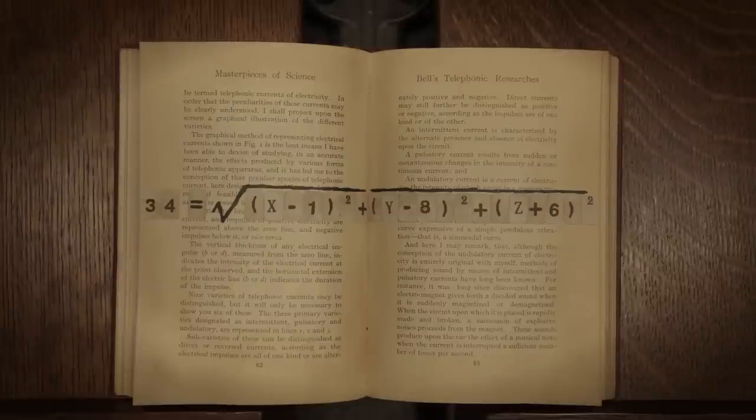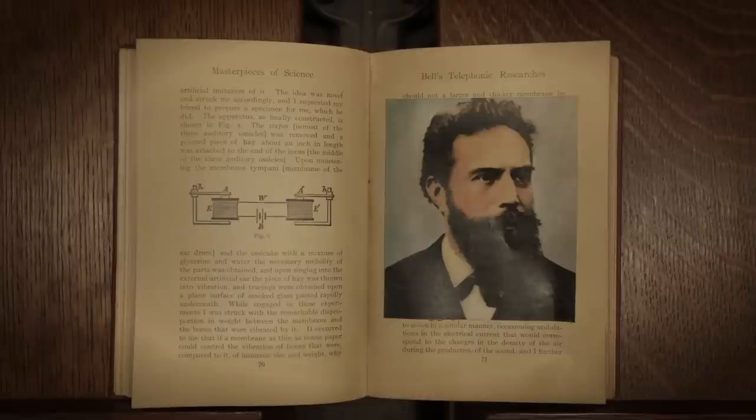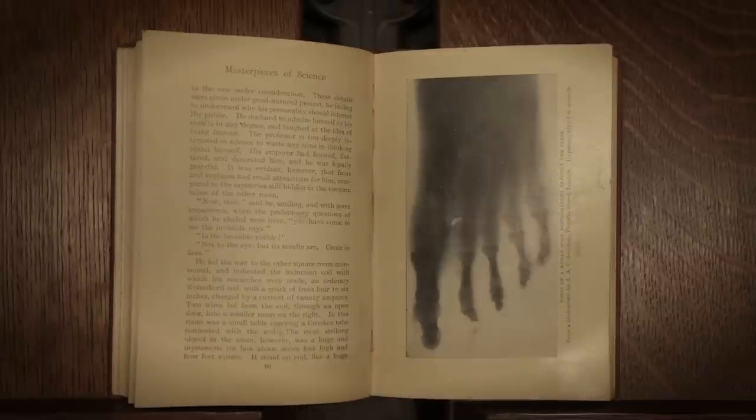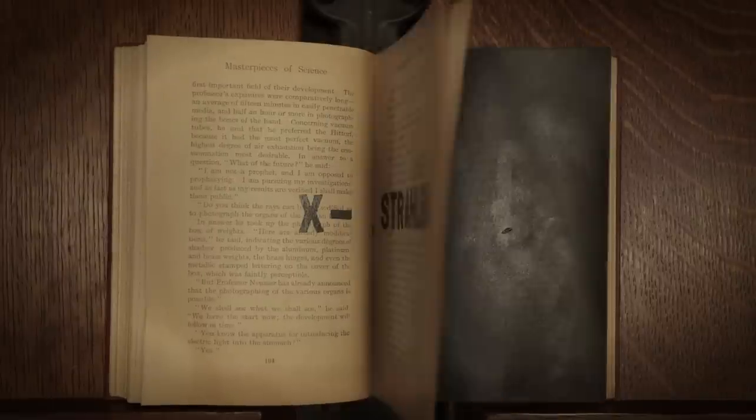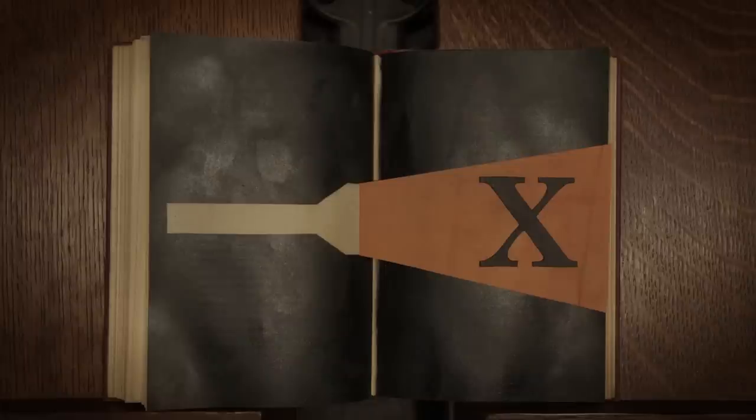When the German scientist Wilhelm Röntgen discovered what we now call X-rays in the late 19th century, he gave them the name X-strahlen. Strahlen is German for shine, and X, of course, represented the unknown nature of the radiation Röntgen had discovered, the X-factor, so to speak.